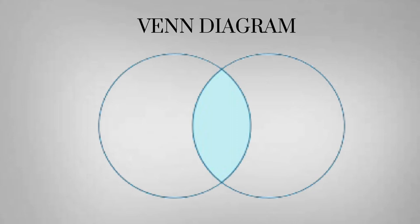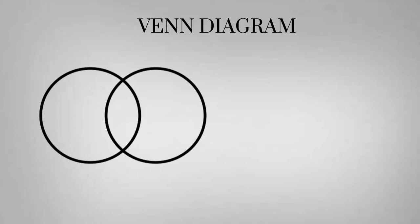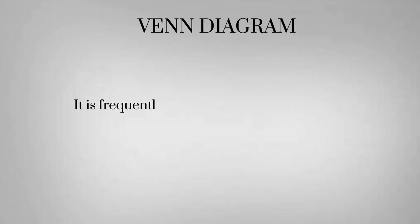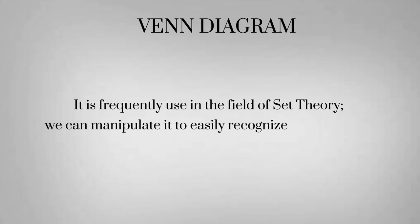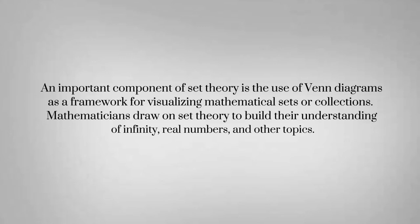A Venn diagram is a tool that we use to easily see the relationship between sets of objects, such as commonalities and contrasts. It is represented by two or more overlapping circles and is frequently used in the field of set theory. We can manipulate it to easily recognize the similarities and differences of the elements in the sets. An important component of set theory is the use of Venn diagrams as a framework for visualizing mathematical sets or collections. Mathematicians draw on set theory to build their understanding of infinity, real numbers, and other topics.